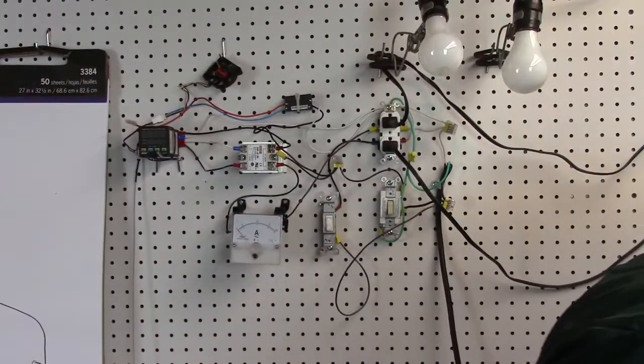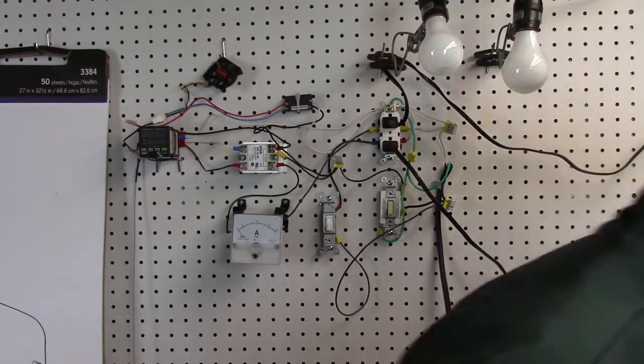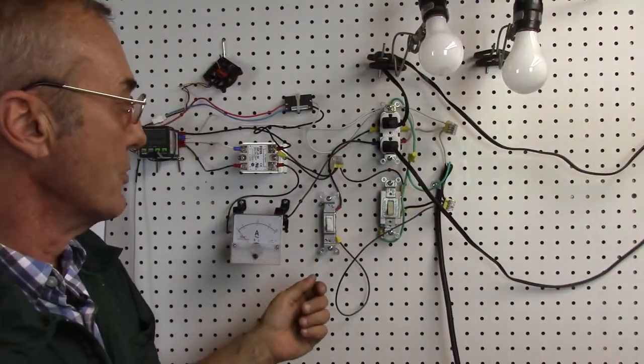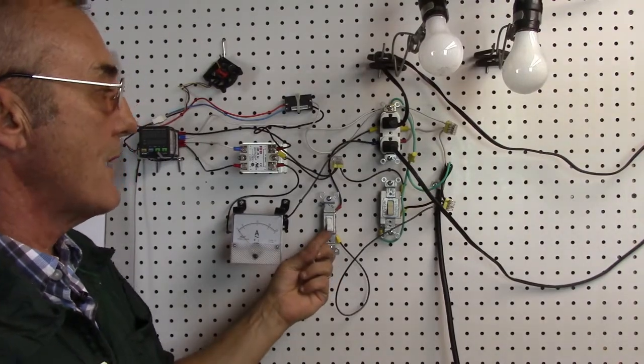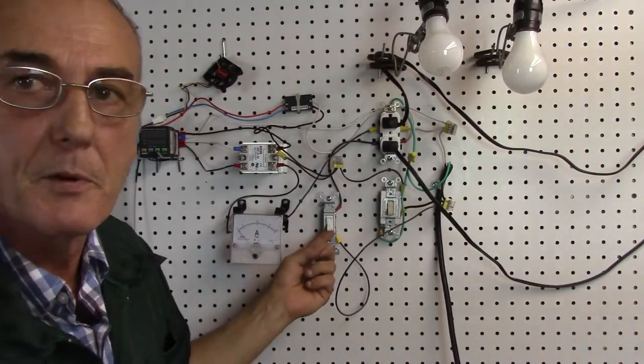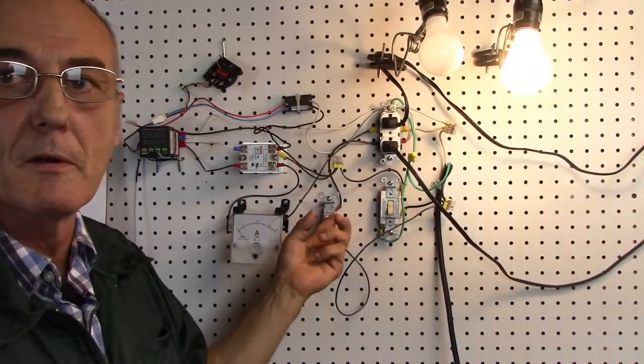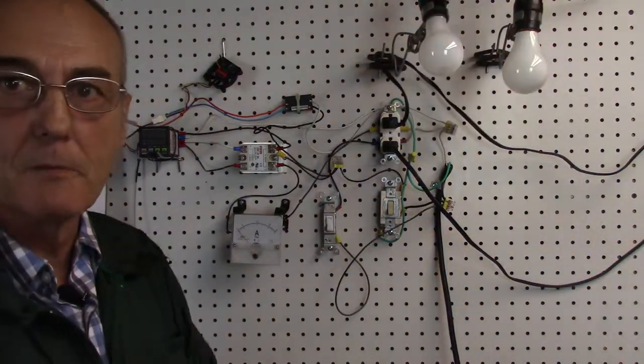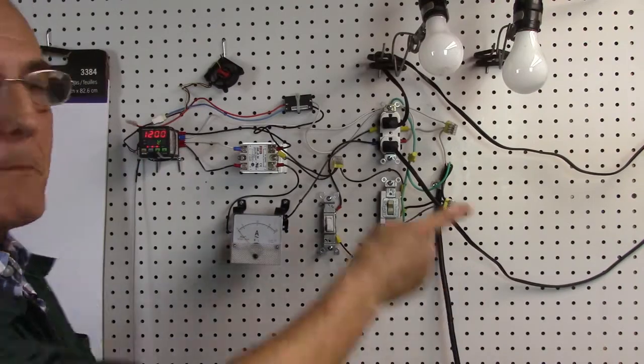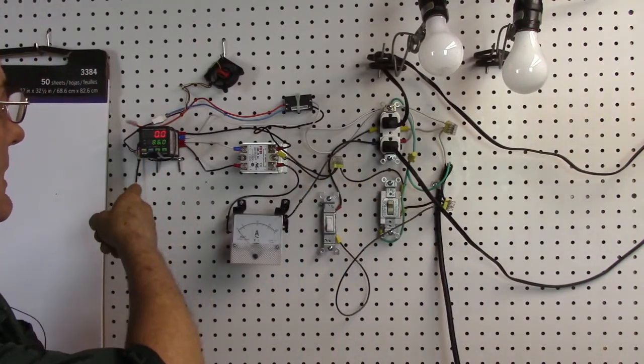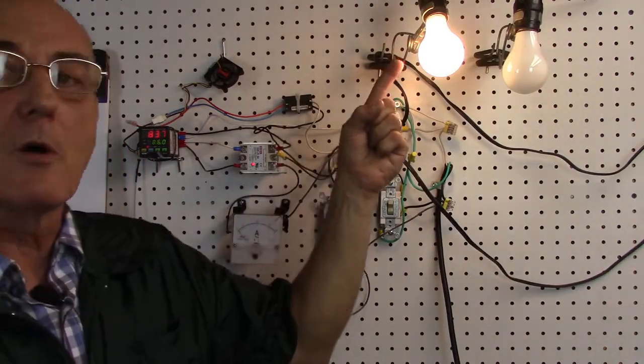Now, first thing we'll do is we'll test this switch to make sure it works. If I turn this switch on, I'm going to predict that that second light is going to come on. I'm right. There you go. The light goes off. If I turn this switch on, my PID is going to operate. It's going to sense the temperature. It's going to turn on.